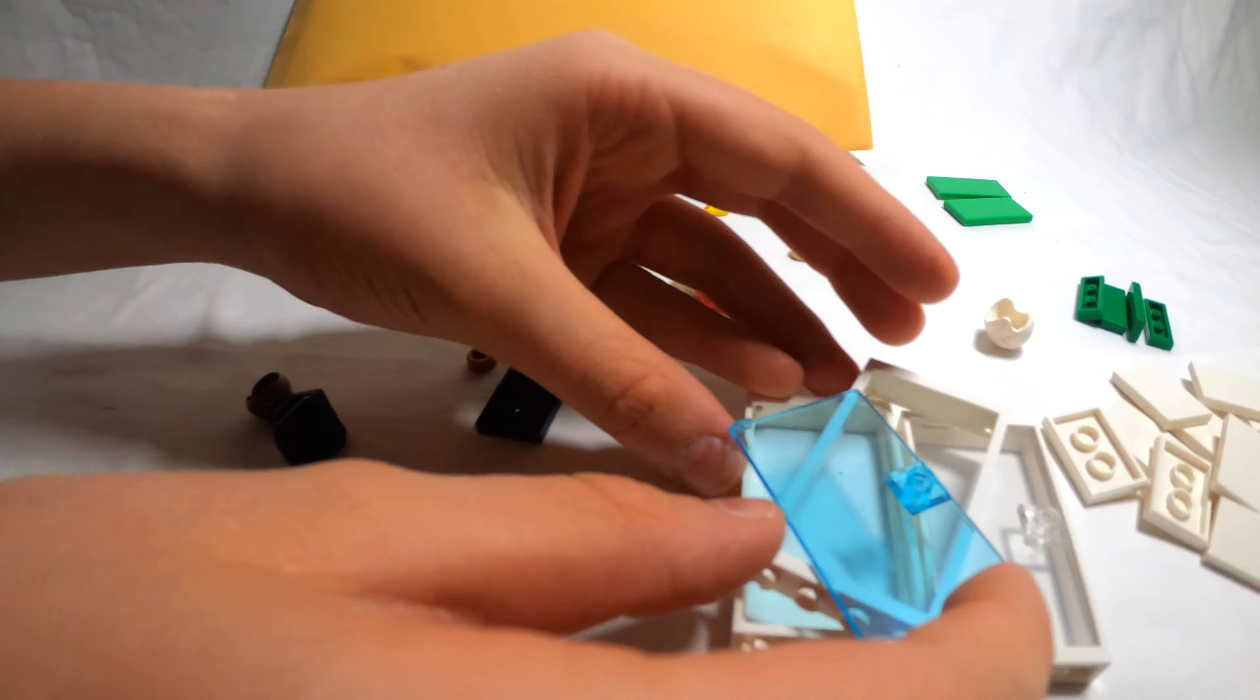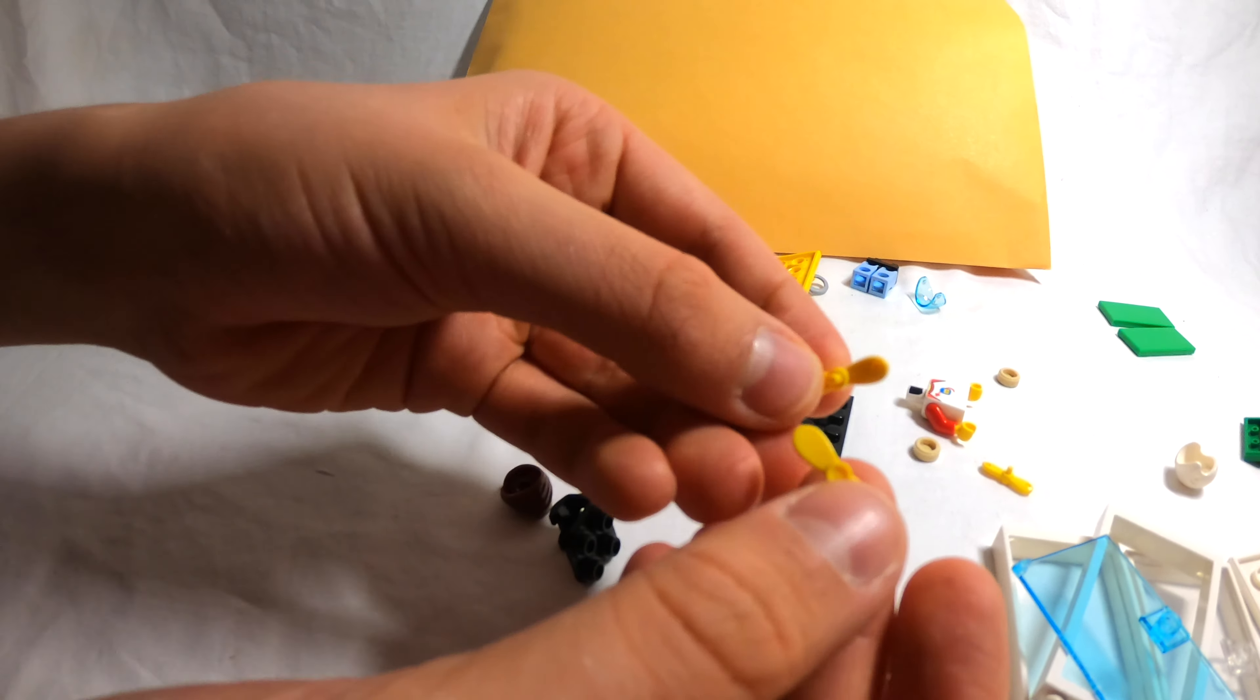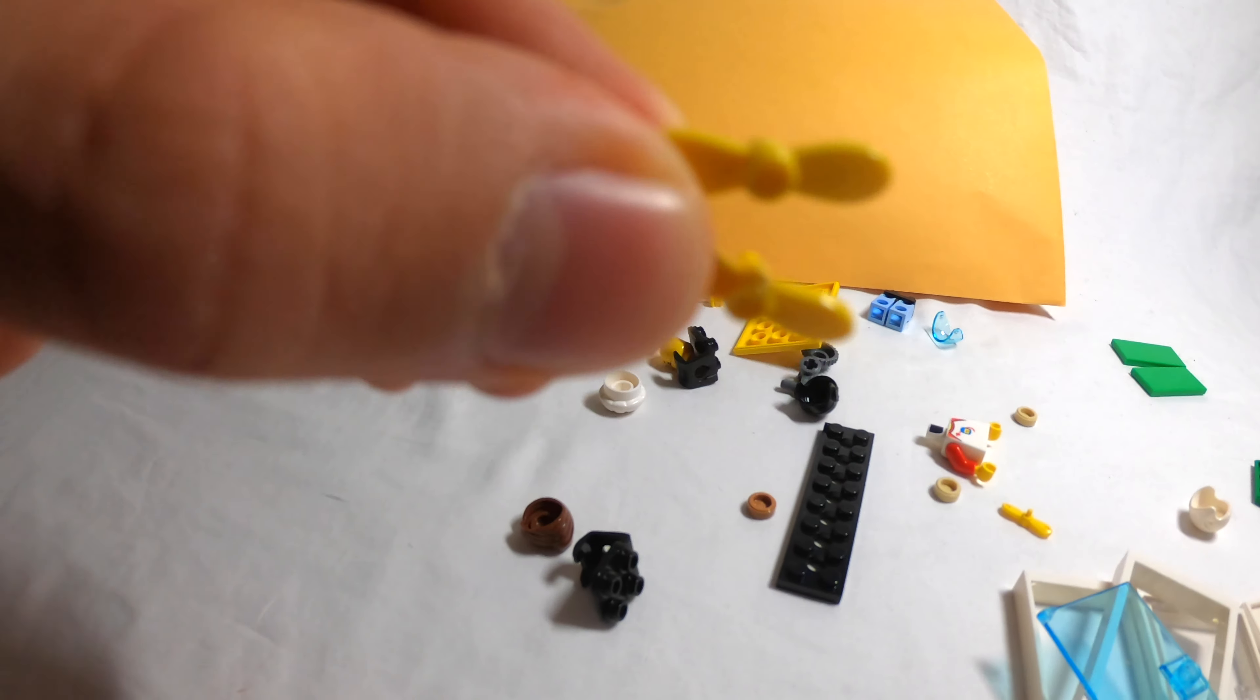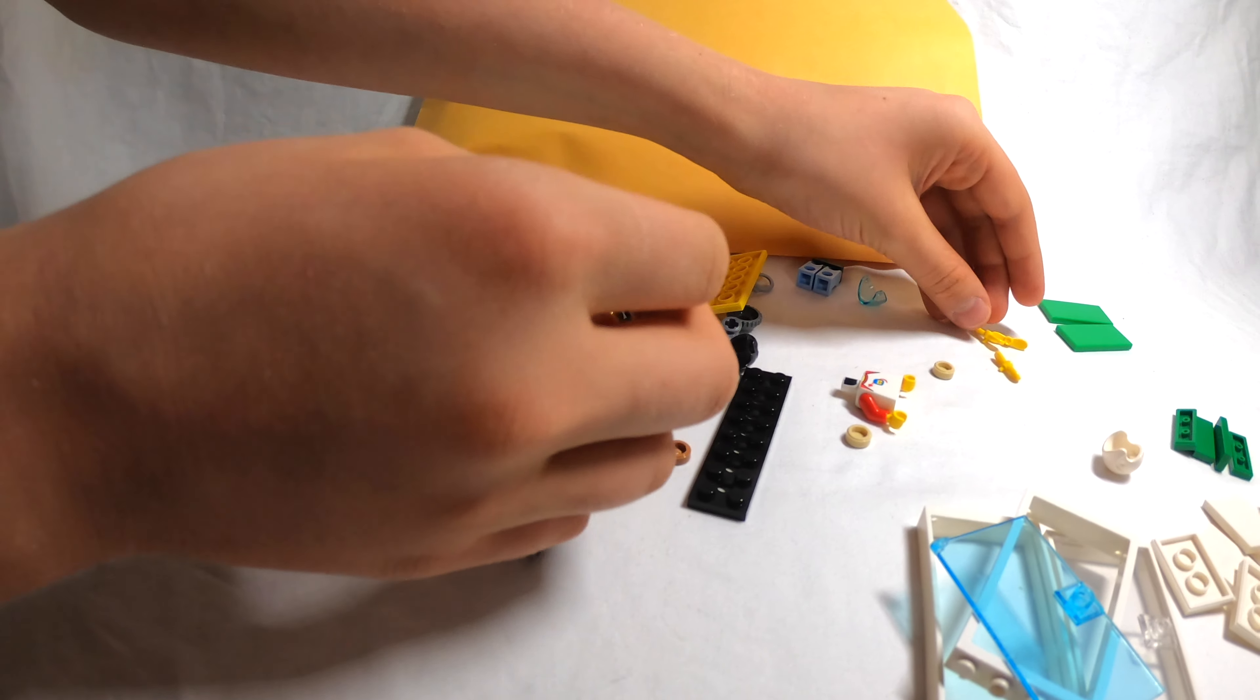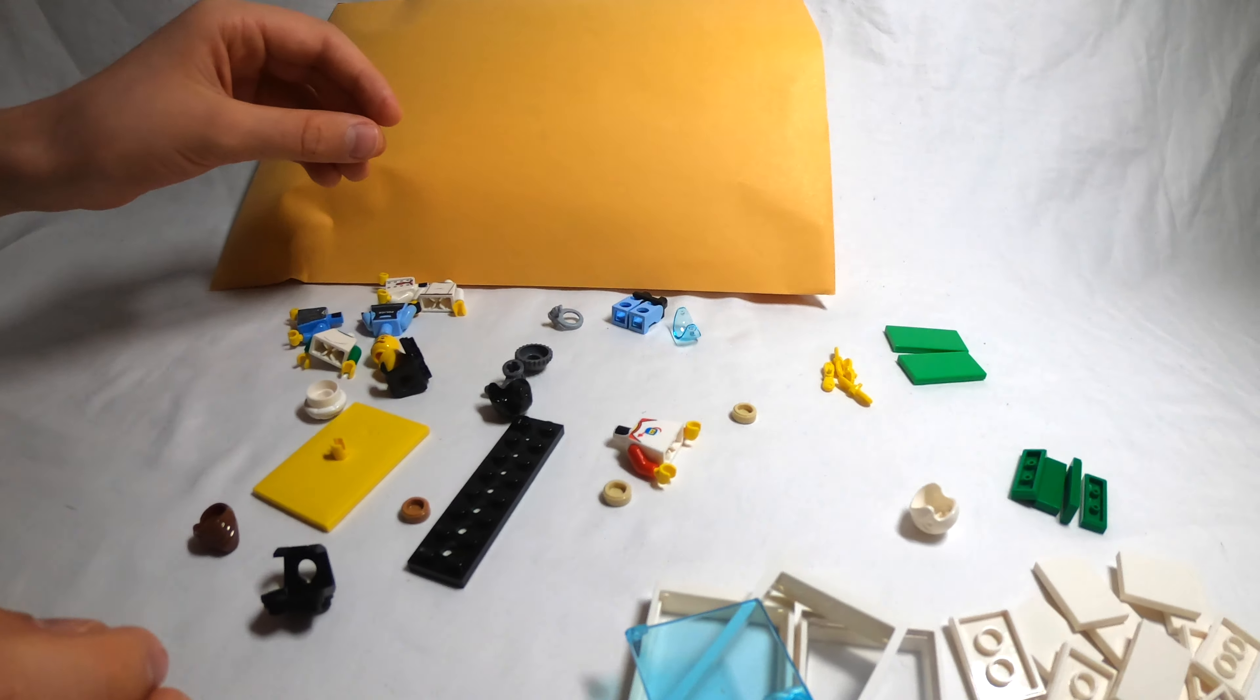Leave the other one for later. So there's the doors. And then there's these propellers which are really good to go on minifigure hats and stuff. We got four of them. Where's the other? Here it is.